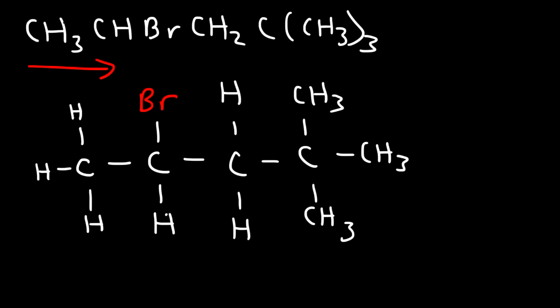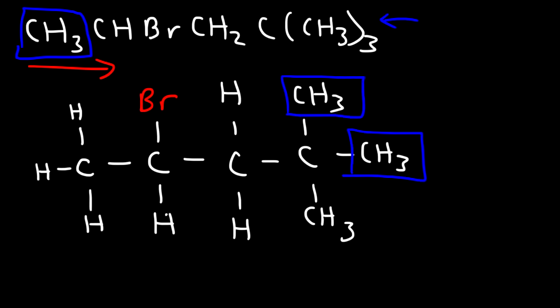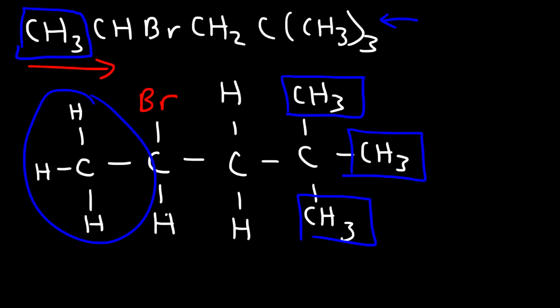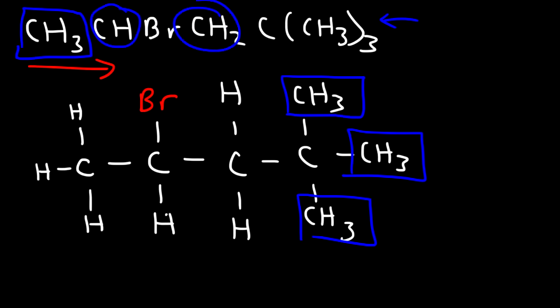And that carbon has three methyl groups. Now whenever you see a CH3 group, it's always at the end — it can never be in the middle. CH and CH2 groups can appear in the middle of the chain, but CH3 groups always tend to stick outside of the chain. They can't be in the middle.